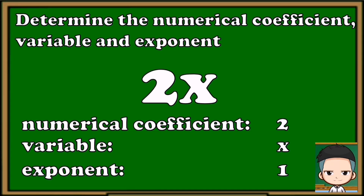Just like the numerical coefficient, if you don't see an exponent, the exponent is 1. Again, if you don't see an exponent, the exponent is 1.